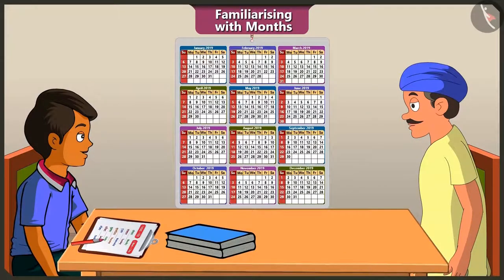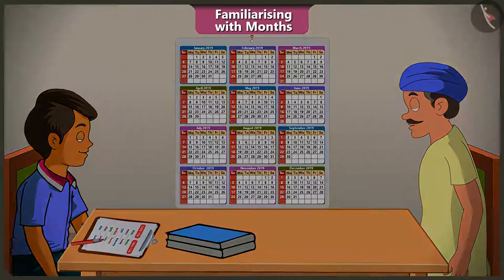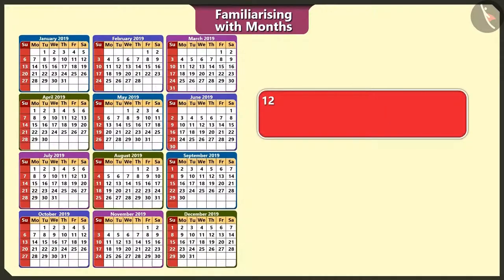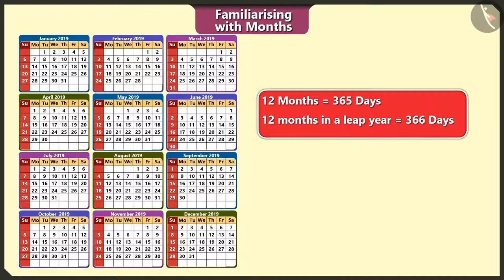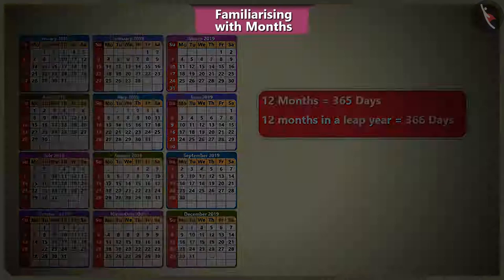Uncle, if we add all the days of the 12 months, then what is the total number of days? If we add all the days of 12 months, it makes a total of 365 days. And if we add all the days of the 12 months in a leap year, then the total number of days is 366.